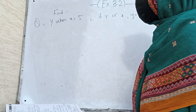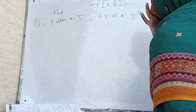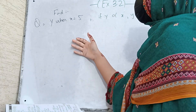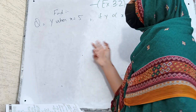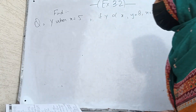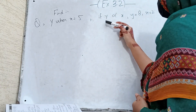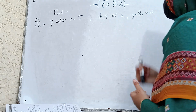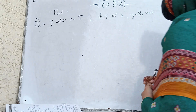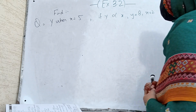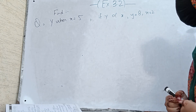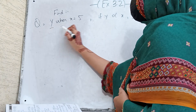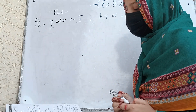If y varies directly as x and y is equal to 8, x is equal to 2, find y when x is equal to 5. If y is directly proportional to x, it means that if y increases then x increases, and if y decreases then x decreases. So we find y when x is equal to 5.